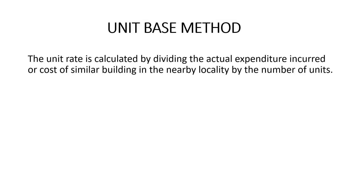The unit rate is calculated by dividing the actual expenditure or cost of a similar building in the nearby locality by the number of units. According to this method, the cost of construction is determined by multiplying the total number of units with the unit rate of each item.